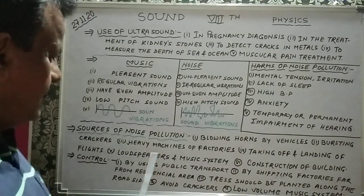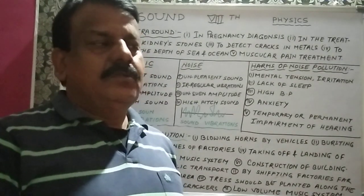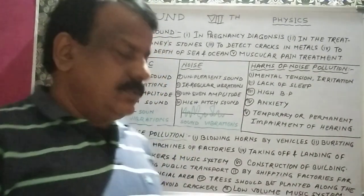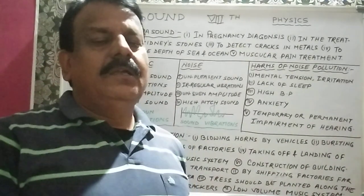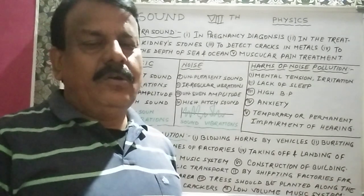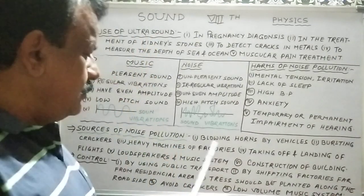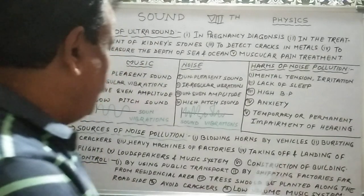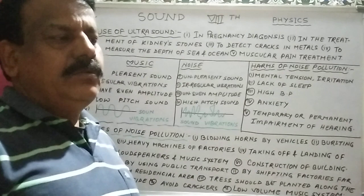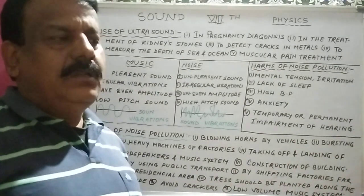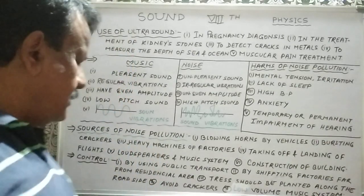Next is the sources of noise pollution. There are many sources of noise pollution, and we will discuss a few important ones. Blowing horns by vehicles in traffic areas and on roadsides — we can see many vehicles blowing horns and engines also making noise — these are major sources. Bursting crackers during Diwali or other festivals or wedding seasons is also a cause of noise pollution.